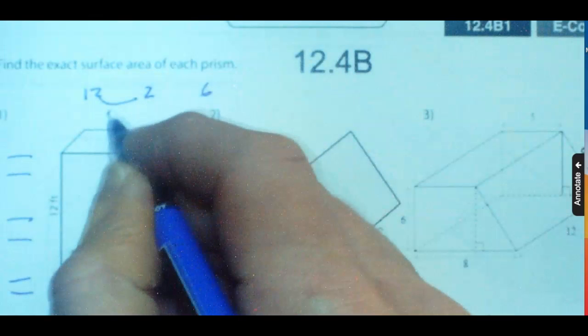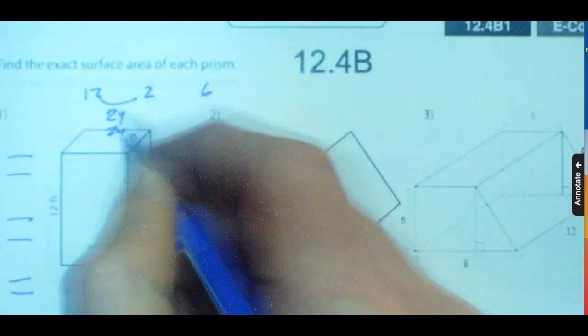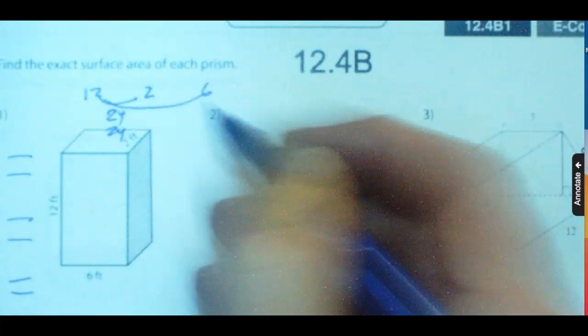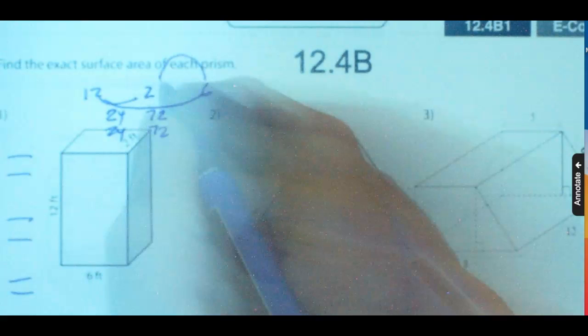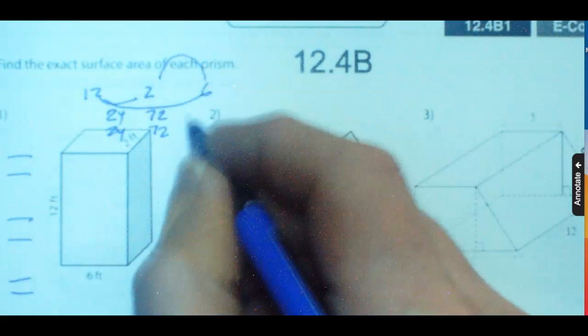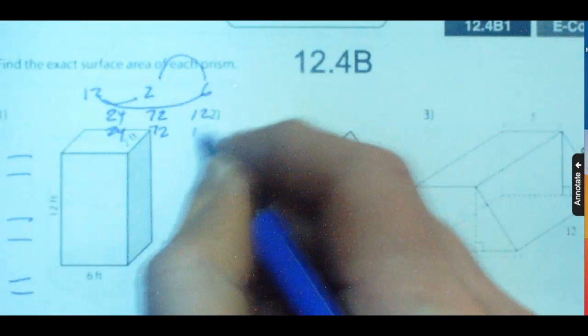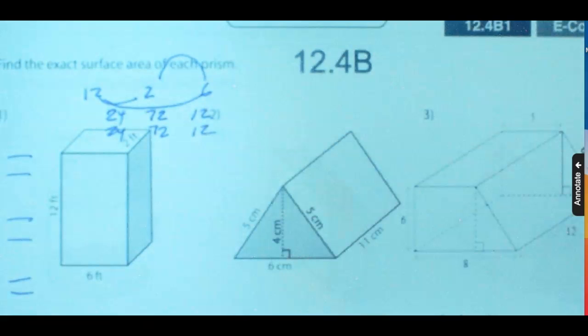12 times 2 would be 24. There would be two sides of 24. 12 times 6 would be two sides of 72 and 72, and then come across the top for the speech bubble. It would be two sides of 12 and 12, and you could add all of those guys up to get it. This would be 48.